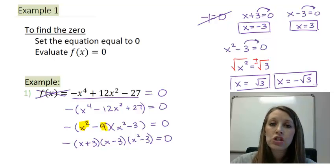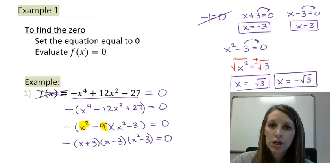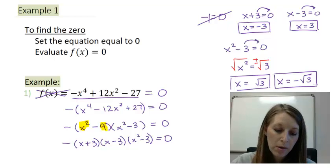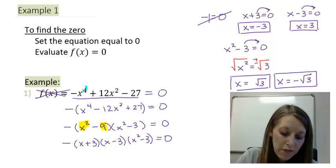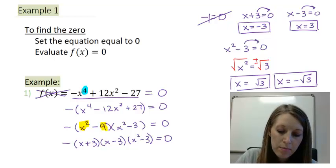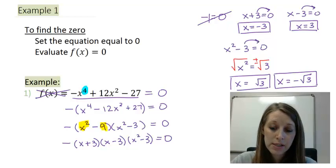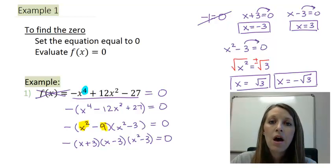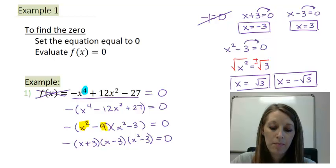So I actually have 4 zeros of this function. You can always double-check the number of zeros by looking at the degree of the problem — this is a degree-4 problem, so I should have 4 zeros. And I see them here: positive 3, negative 3, positive √3, and negative √3.